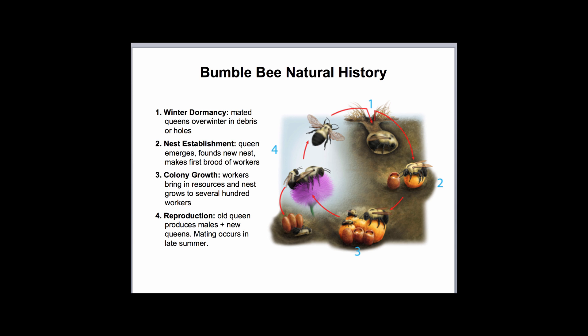This time of year, in April, bumblebee queens are emerging from their winter burrows and searching for new nest sites. Later in the month, once they've found a suitable nest site, they'll begin gathering resources to make their first wax pots and rear their first brood. After the first brood emerges in mid-May or so, that queen will never leave the nest again. She'll stay in the nest and lay eggs and send her workers out to gather resources.